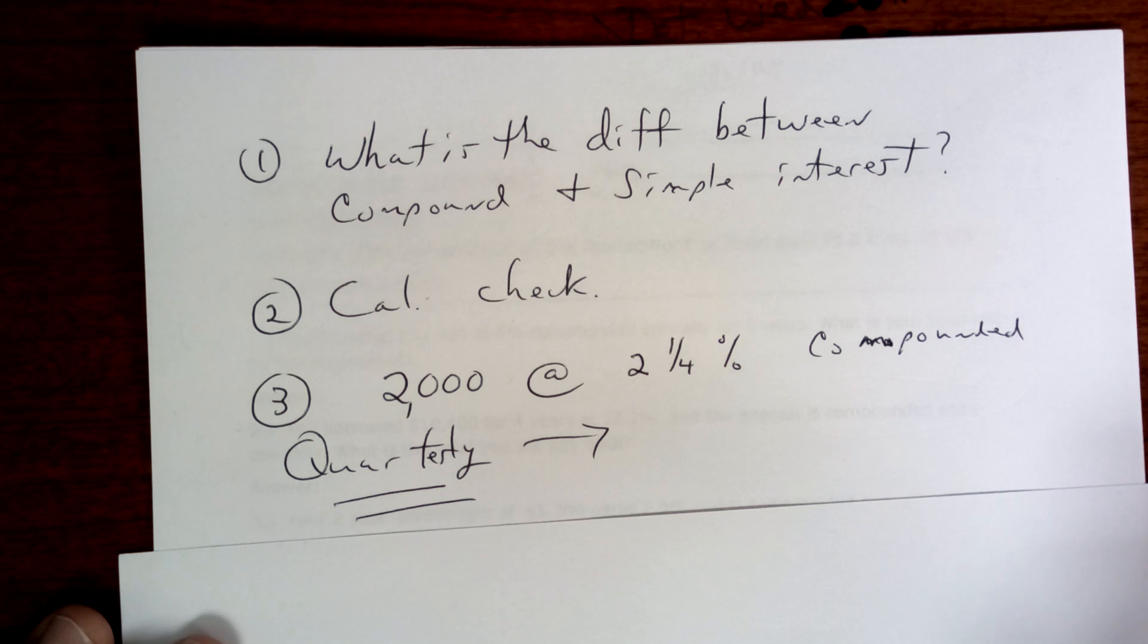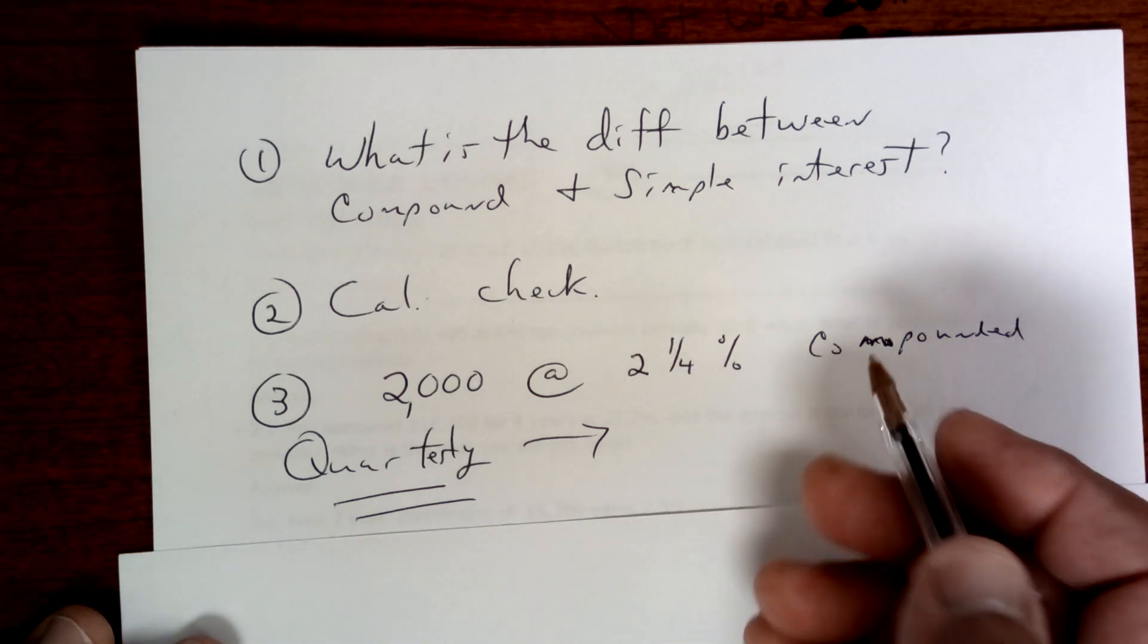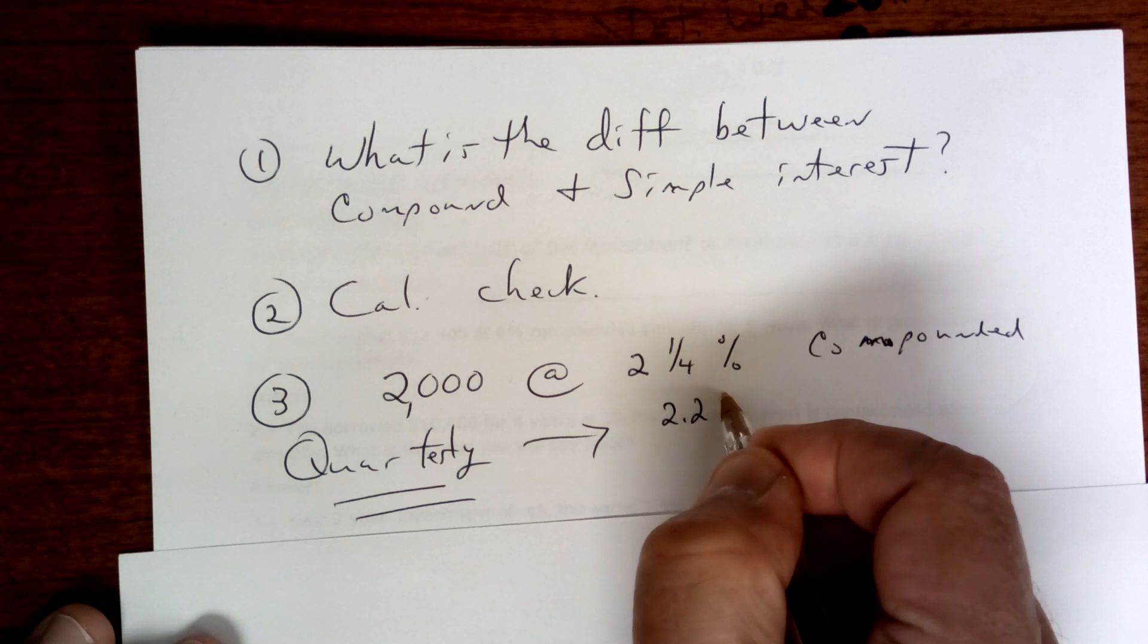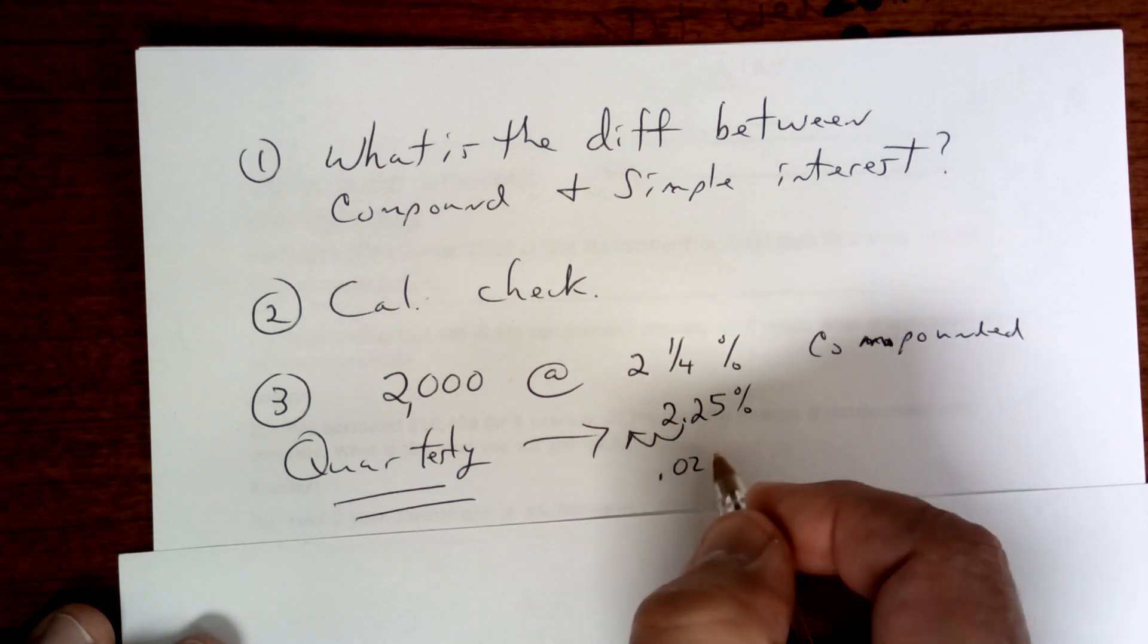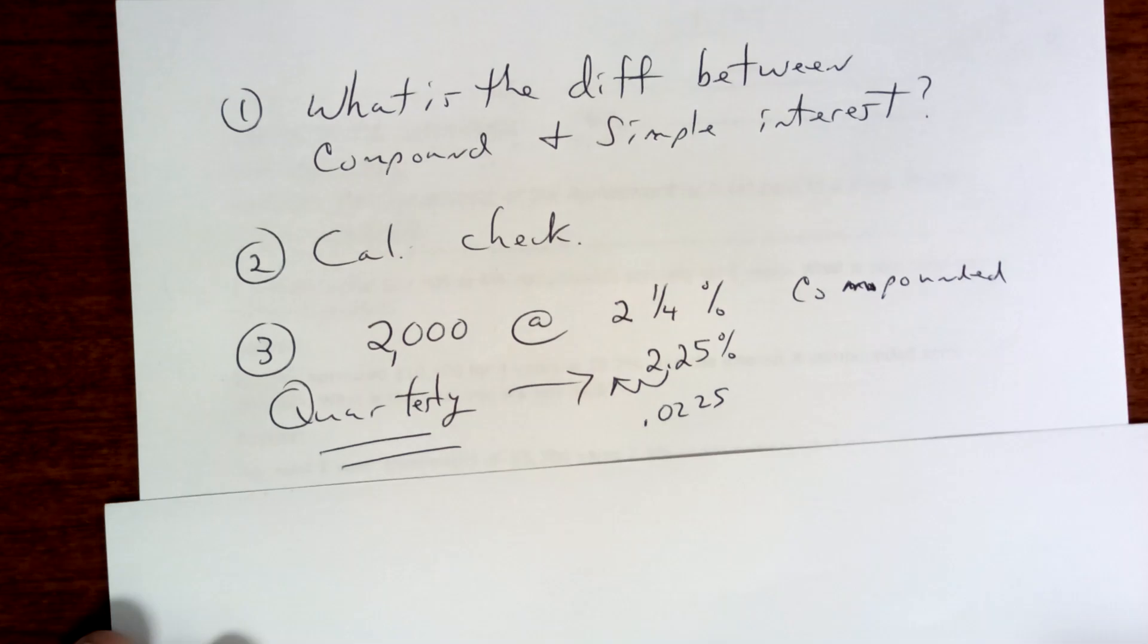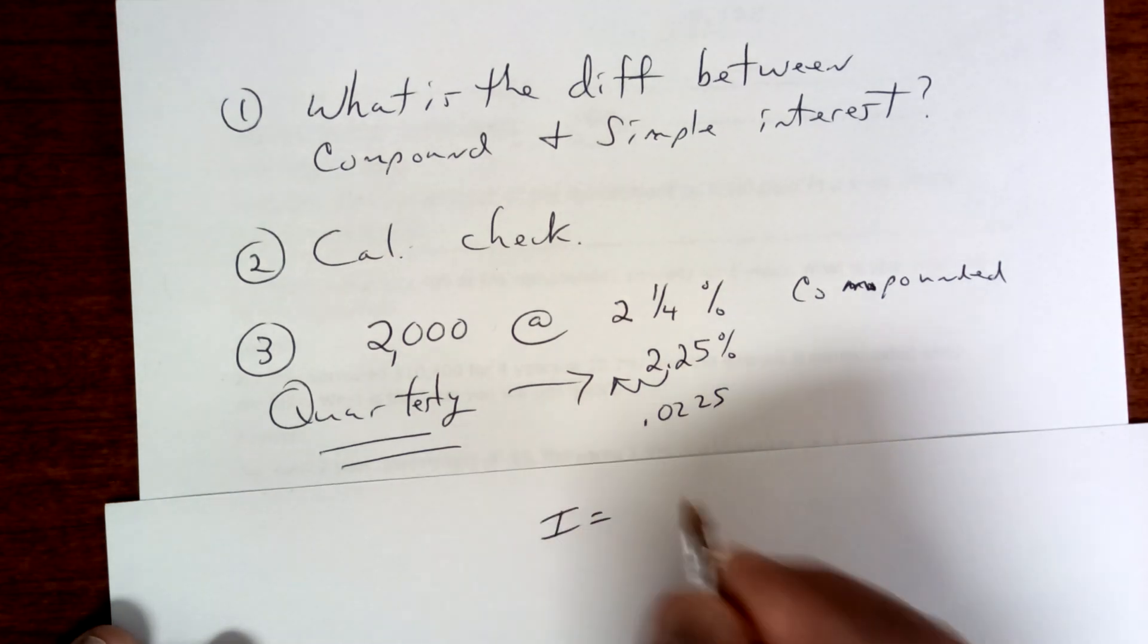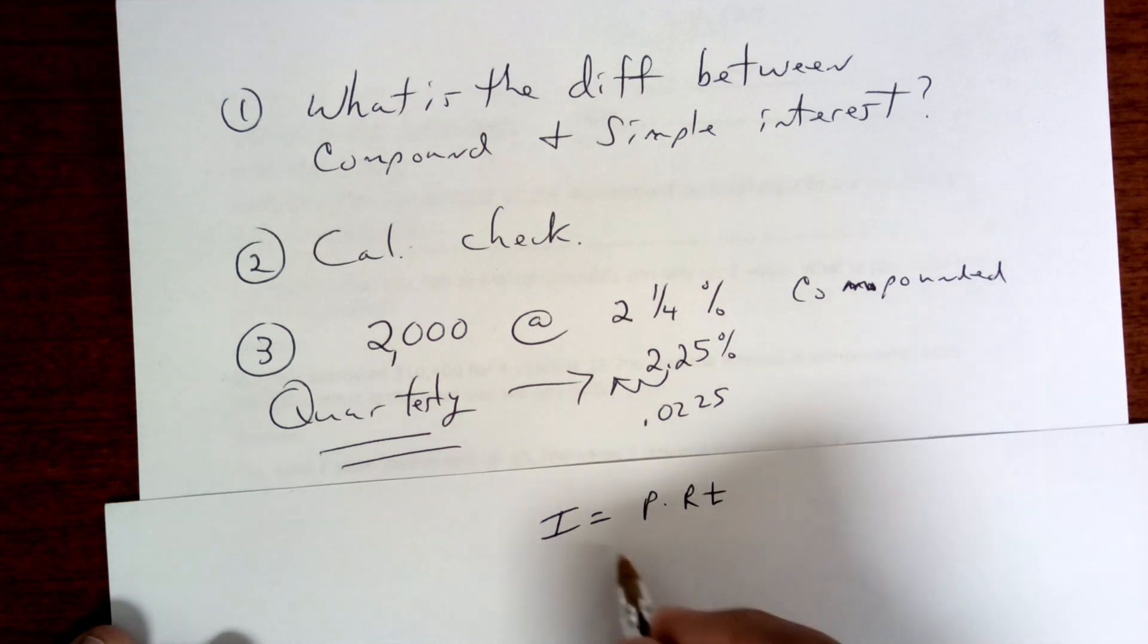Let's take a look here. Quarterly means four times a year, that's every three months at two and a quarter percent. Well, two and a quarter percent is 2.25%, so you've got to move that over two places and that becomes 0.0225. And it's compounded quarterly.